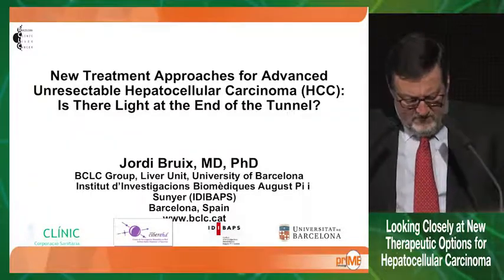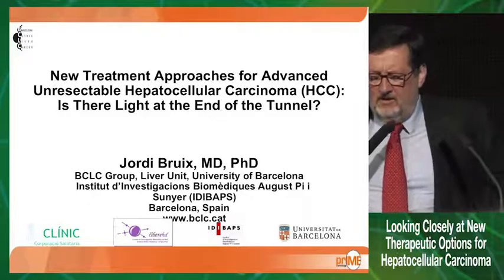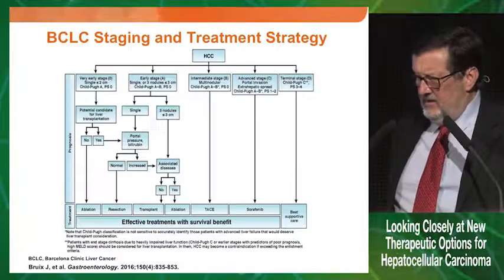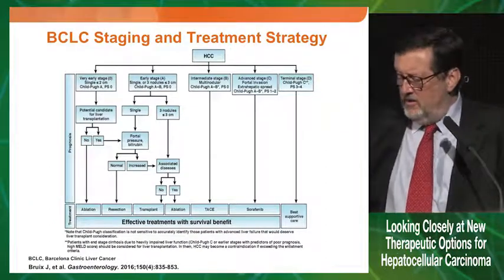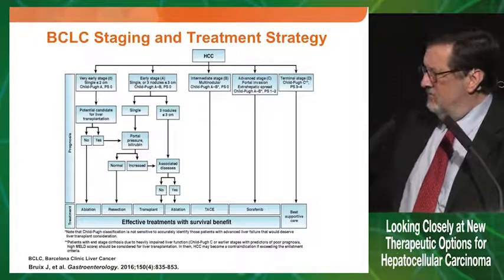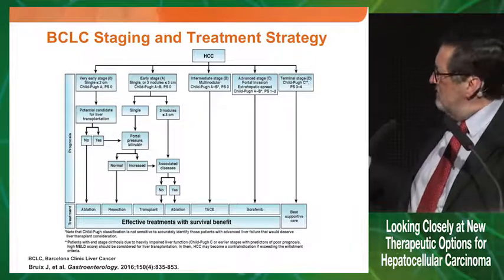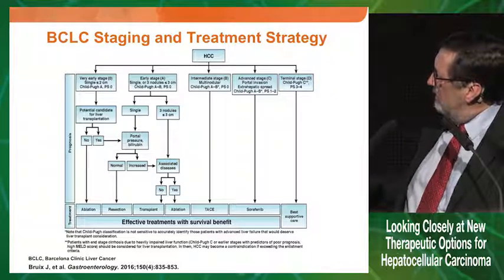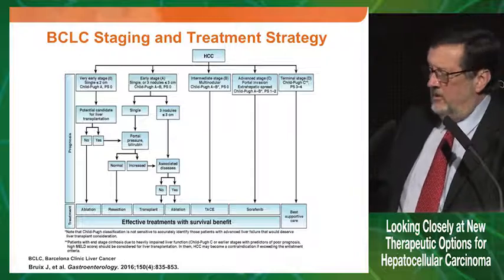I will save some time because some of the questions have already been posed. This is the outline of the current BCLC as it was presented in 2012 — it was not incorporated in the guidelines because it was preferred to adhere to what was in the American guidelines. Here you see the treatment stage migration already in place in the early stage: when you have associated diseases and comorbidities, you jump from resection to transplant, or from transplant to resection, or resection to ablation. This is already in the model.